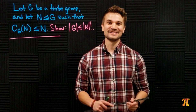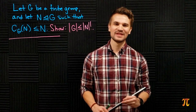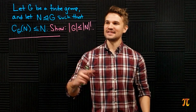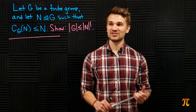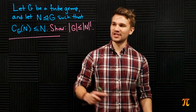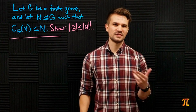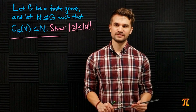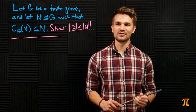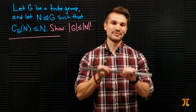Welcome back. Today we have a nice basic group theory problem. Let G be a finite group and let N be a normal subgroup of G such that the centralizer of N under G is a subgroup of N — so its centralizer is a subgroup of itself. Show that the order of G is less than or equal to the order of N factorial.